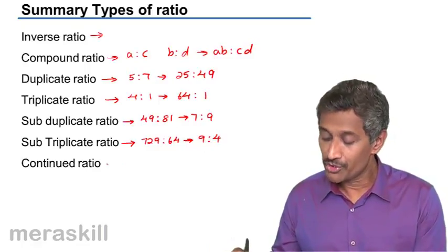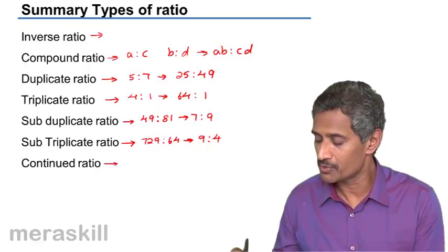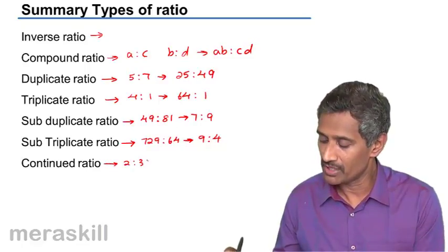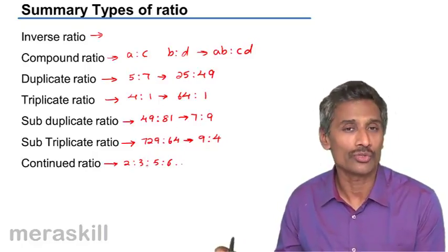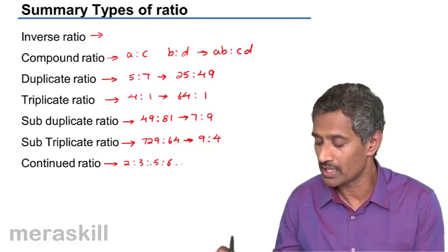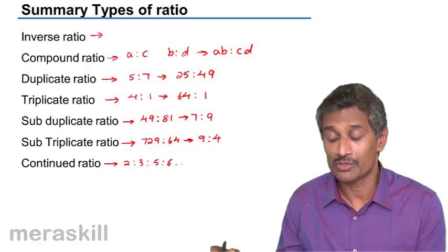Continued ratio: when the number of terms is more than 2, we take it as a continued ratio. So suppose you have 2 is to 3 is to 5 is to 6 and so on. This is a continued ratio; the ratio continues with more than two terms.